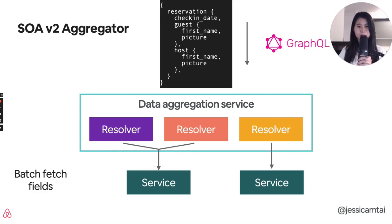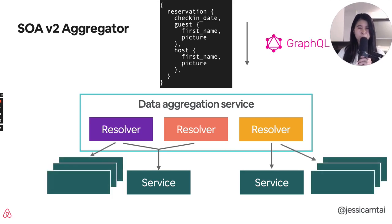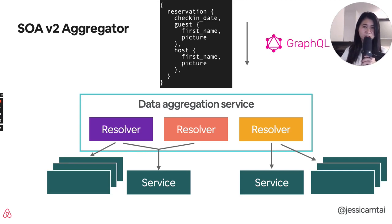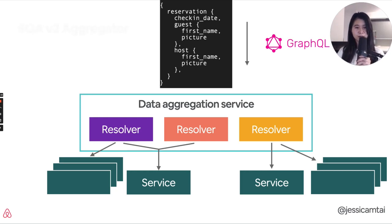We've added some optimizations on the resolver: if we recognize that multiple resolvers are fetching from the same data source, we'll batch those together and make a single query to the underlying service. This helps with performance and scalability — it reduces the number of callers to our data service and creates fewer downstream requests. However, remember that with hundreds of services, the data aggregation service would still need to talk to hundreds of other services, so we were wondering how we could further simplify the graph.